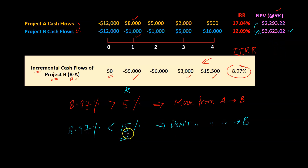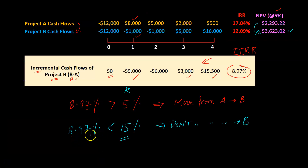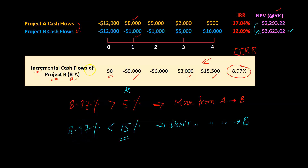In contrast, if your discount rate were something like 15%, then because 8.97% is less than 15%, the IIRR says don't make the move. And if we look back at the table showing the NPVs of both projects A and B for different discount rates, notice that for 15%, the NPV of A is higher than the NPV of B. In other words, if you're at A, you shouldn't move to B because A is the higher NPV project — and incremental IRR is telling you the same thing: 8.97% is less than 15%, so don't move from A to B.